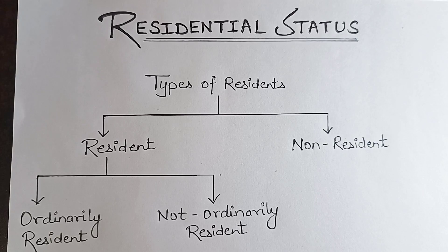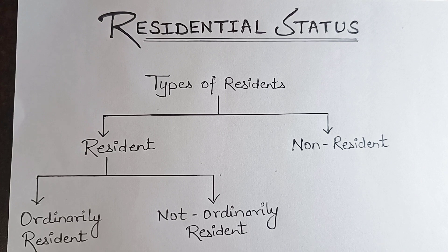Hello everyone. Today we are going to learn about the residential status of an individual. In the last class we learned that there are 7 types of persons according to the Income Tax Act. The first type was individual. Today we will only study individual, and in the next class we will study all the rest of the persons.